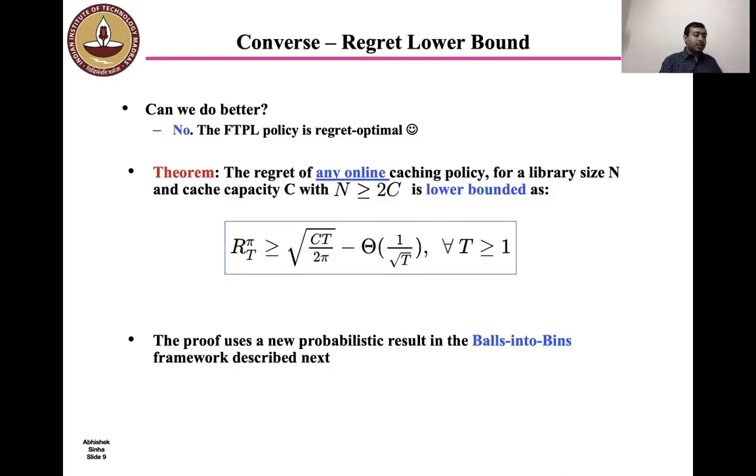Next, a natural question is whether we can actually do better. That is, whether the regret bound obtained by the FTPL policy can be improved. However, we prove a regret lower bound that shows that for any online caching policy for a library size N and a caching capacity C with N ≥ 2C is lower bounded by √(CT/2π) minus some constant divided by √T. And this is a non-asymptotic regret bound which is valid for any T ≥ 1. Its proof uses a new probabilistic result in the balls into bins framework of the classical probability theory and we are going to describe it next.